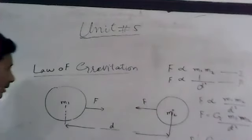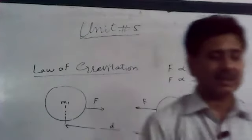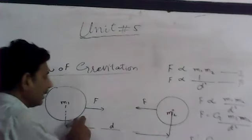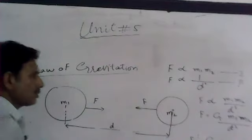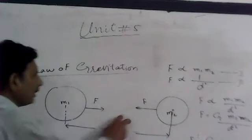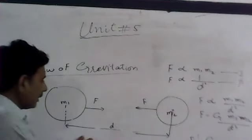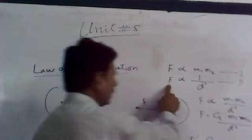The law of gravitation means that everyone in the universe attracts every other body. Consider two bodies of mass M1 and M2. The force F is directly proportional to M1 and M2, and inversely proportional to the square of the distance — that is, 1 over D squared.